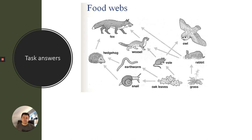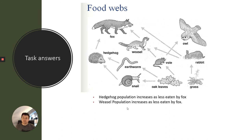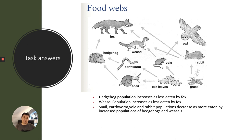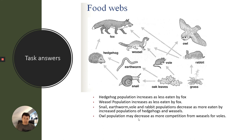The fox population decreases, so hedgehog populations are going to increase as fewer are eaten by foxes. The weasel population will also increase. Therefore the primary consumers — snails, earthworms, voles, and rabbits — will decrease as more are eaten by the increased populations of hedgehogs and weasels. The rabbit population may not decrease as much because there are also fewer foxes eating them, so it depends on how large the weasel population becomes. The owl population may also decrease due to more competition from weasels eating the voles.